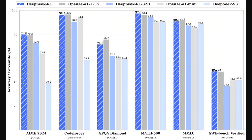Looking at the benchmarking numbers: on AIME, the model outperformed OpenAI o1 by a minor margin — 79.8 vs 79.2. On CodeForces the results are almost similar — 96.3 vs 96.6. On GPQA Diamond, OpenAI o1 has a decent lead, but on MATH 500 the model outperformed by a decent margin. Similarly on MMLU: 90.8 vs 91.8, and on the SWE benchmark DeepSeek R1 outperformed as well.